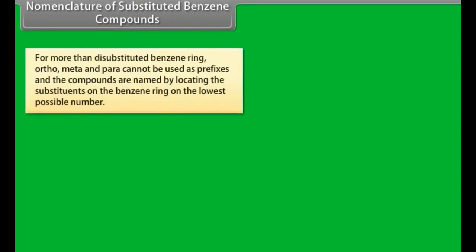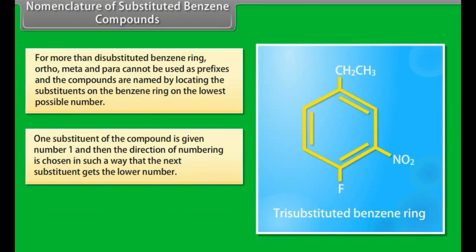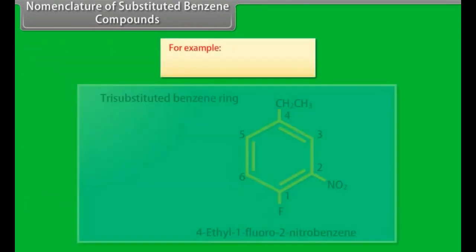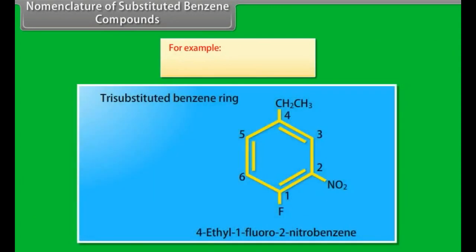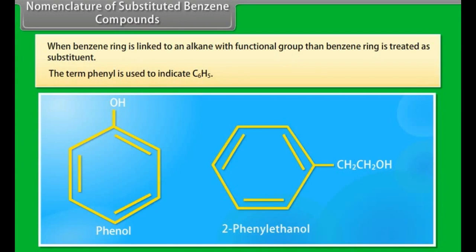For more than di-substituted benzene rings, ortho, meta, and para cannot be used as prefixes, and compounds are named by locating substituents on the benzene ring using the lowest possible numbers. One substituent is given number 1, and the direction of numbering is chosen so that the next substituent gets the lower number, with substituents appearing in alphabetical order. For example, assigning number 1 to fluorine, nitro gets 2 and ethyl gets 4, giving the name 4-ethyl-1-fluoro-2-nitrobenzene. When a benzene ring is linked to an alkane with a functional group, the benzene ring is treated as a substituent using the term phenyl to indicate C6H5.